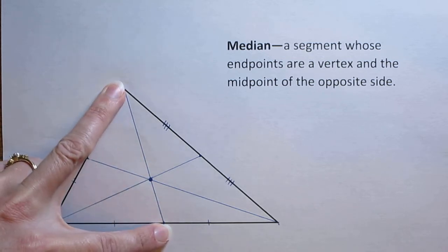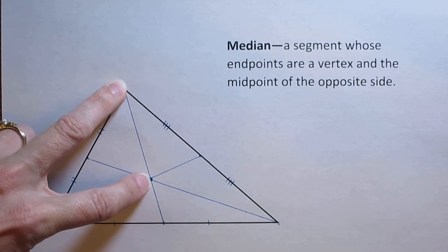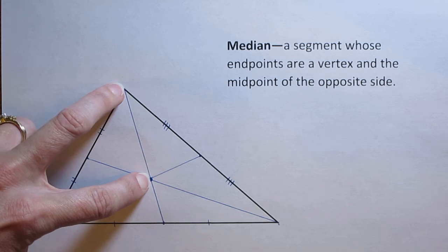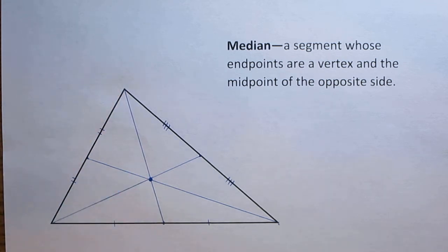Whatever your median is, that centroid will be located ⅔ of the way from each of the vertices. The centroid will also always be inside of a triangle.